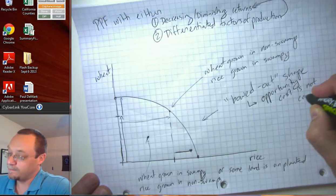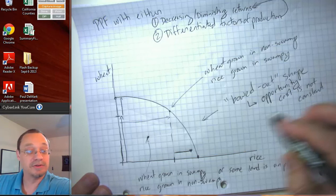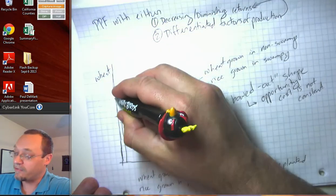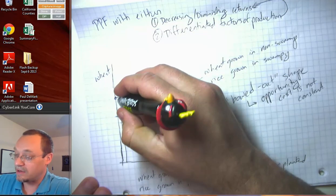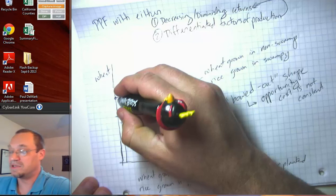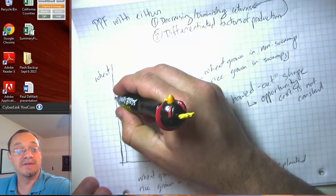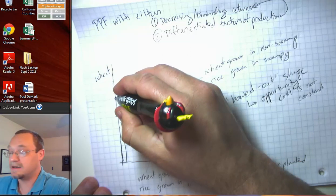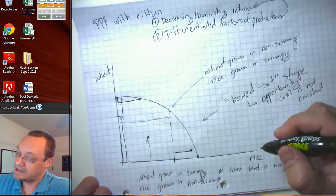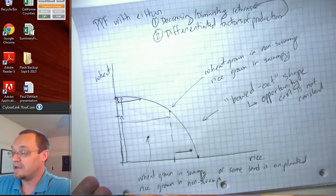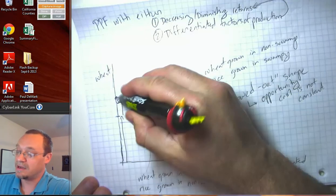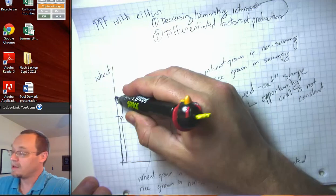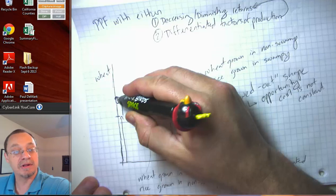And in particular, the opportunity cost, let's suppose we start here up in this corner. At first, as we start to try to get more rice, we only have to give up a relatively small amount of wheat to get a relatively large amount of rice. But for the next step here, to get a similar level of increase in the rice production, we have to give up more wheat. This down arrow here is bigger than that down arrow there. So you can see how the opportunity cost changes as you're going along the PPF.